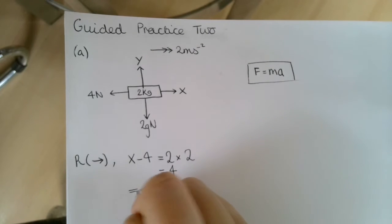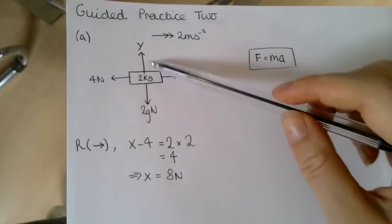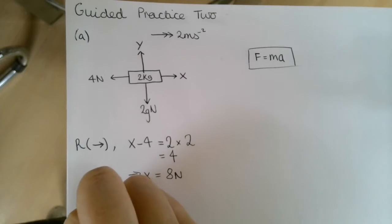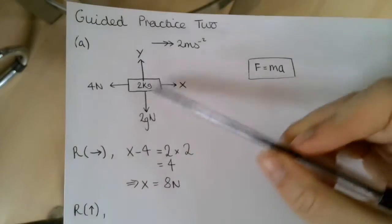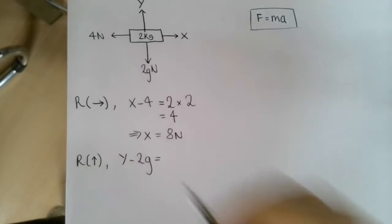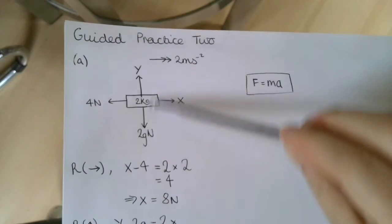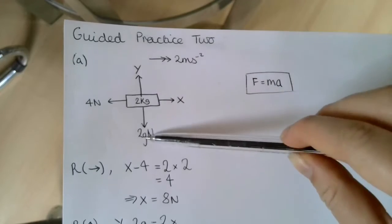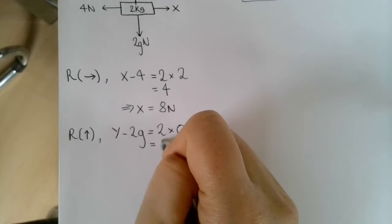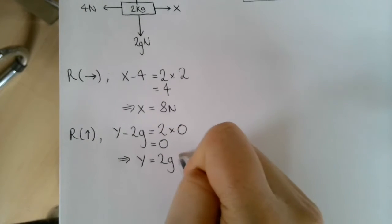So X is equal to 8 newtons. Remember that X is a force, so it's measured in newtons. To find Y, we resolve upwards vertically. The resultant force in the upward direction is Y subtract 2G, and that equals M times A. Our mass is 2 kilograms and the acceleration upwards is 0 — we are not accelerating up or down. So Y subtract 2G equals 0, meaning Y equals 2G newtons.